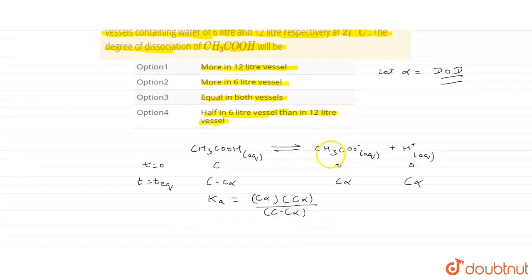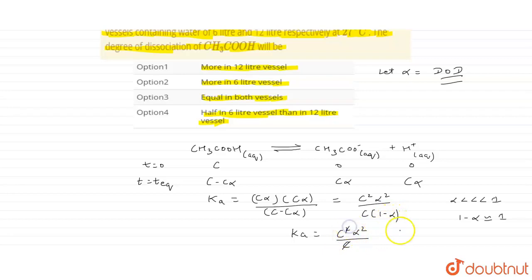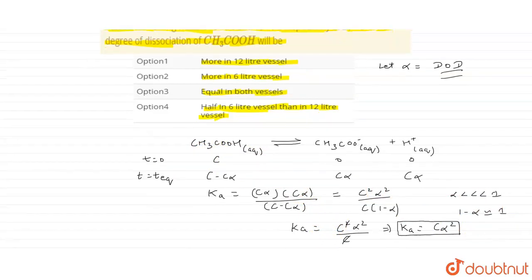Ka equals C² alpha² divided by C(1 minus alpha). Since alpha is very small for a weak acid — much less than one — (1 minus alpha) is approximately equal to 1. So Ka simplifies to C·alpha². This gives us Ka equals C·alpha², which is the dissociation constant of CH₃COOH.